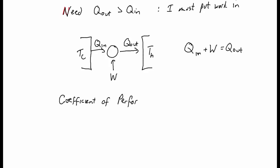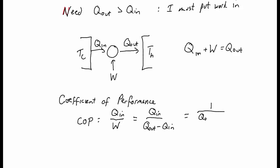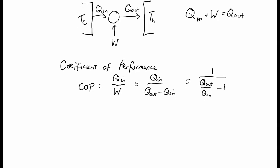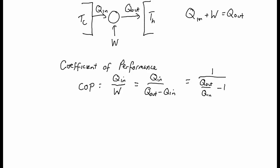For engines we talked about efficiency; for refrigerators we talk about the coefficient of performance. The coefficient of performance is the ratio of the heat absorbed by the refrigerator divided by the work that you have to do. The more work you have to do, the smaller the coefficient of performance. I can write the work as Q_out minus Q_in, so I can write this entirely in terms of heat. I can also write this as 1 over (Q_out over Q_in minus 1).